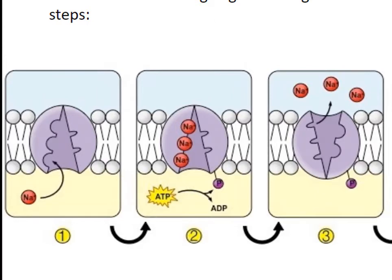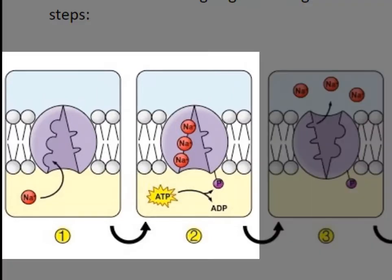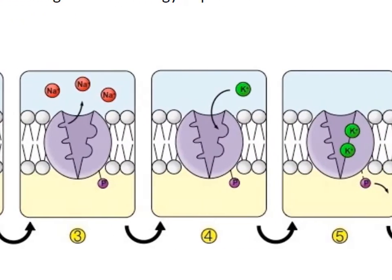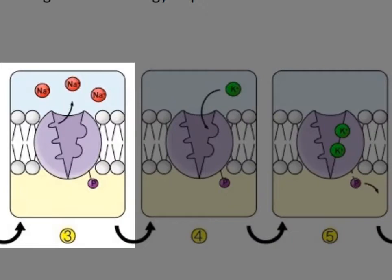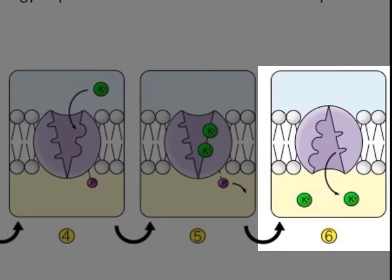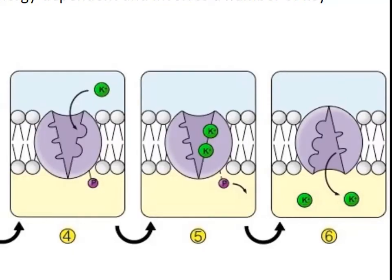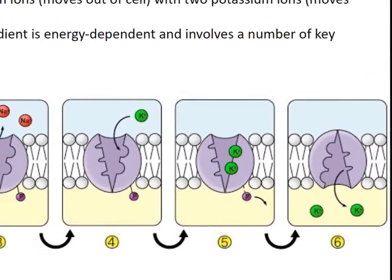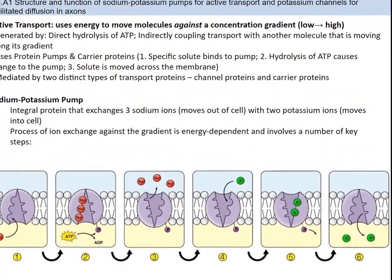Let's discuss the sodium-potassium pump, which is an active transport pump. First, three sodium ions bind to the intracellular sites on the pump. Then a phosphate group is transferred to the pump via the hydrolysis of ATP. After this, the pump undergoes a conformational change — meaning it changes shape — and it moves sodium across the membrane. This change exposes two potassium binding sites on the extracellular surface. The phosphate group is released, which causes the pump to return to its original shape and moves potassium across the membrane, completing the ion exchange. This links to topic 6.5 and the resting potential being maintained.